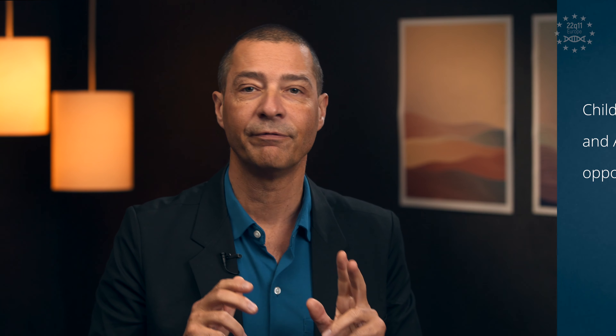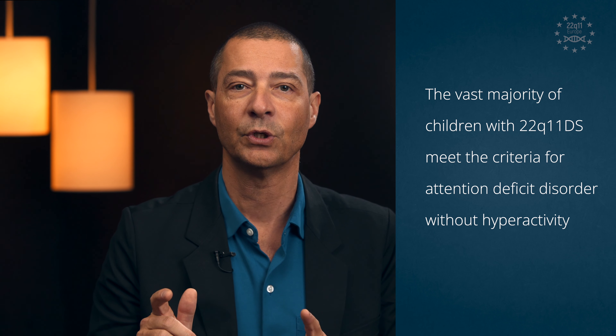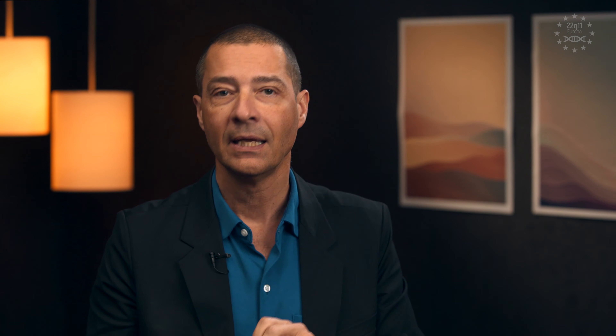Children with 22QDS and ADHD show fewer oppositional symptoms compared to children with regular ADHD. Most importantly, the notable difference is in the expression of symptoms as referred to ADHD subtypes. The vast majority — between 60 and 80% — of children with 22QDS meet the criteria for attention deficit disorder without hyperactivity, while 80% of children with ADHD without 22Q present a combination of attention deficit and hyperactivity.